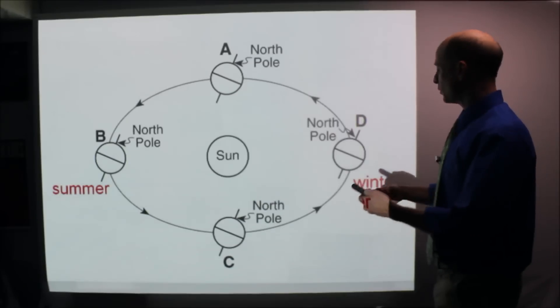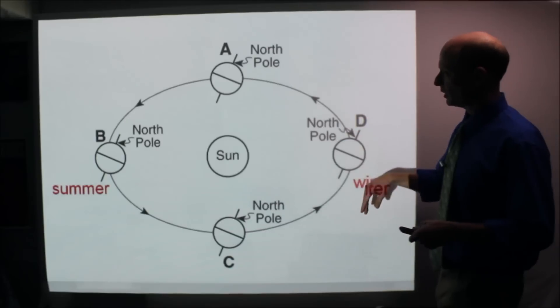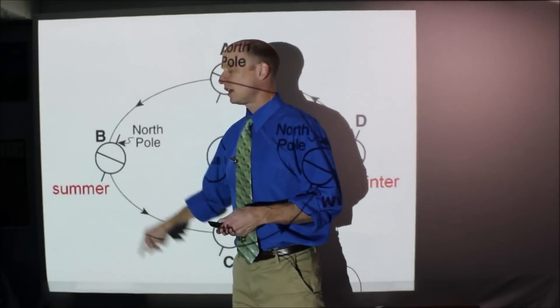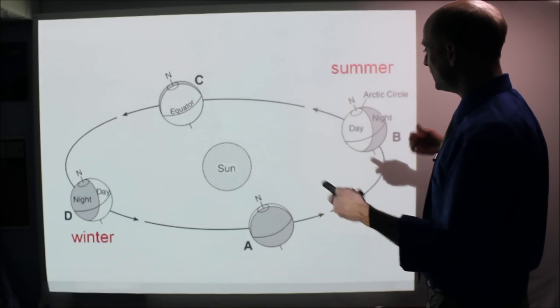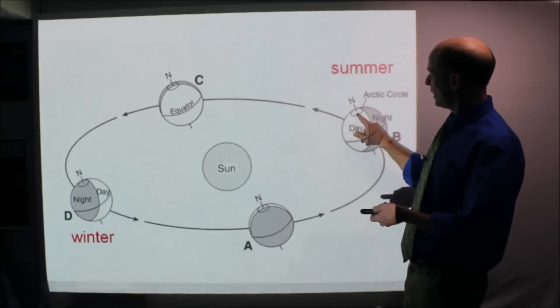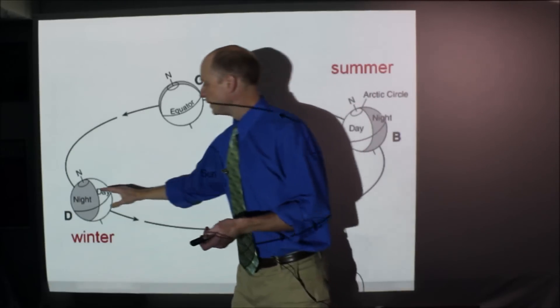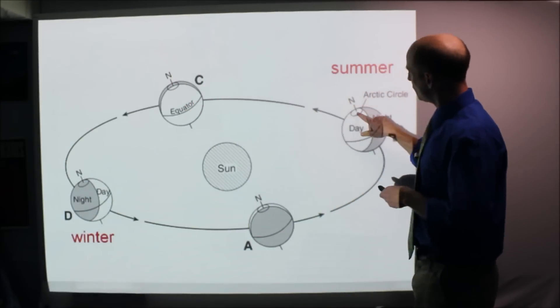Now going back to the diagrams: north pole tilted away from the sun means winter; north pole tilted towards the sun means summer for us in New York. Looking at it from a different perspective — north pole towards the sun is summer, north pole tilted away is winter.